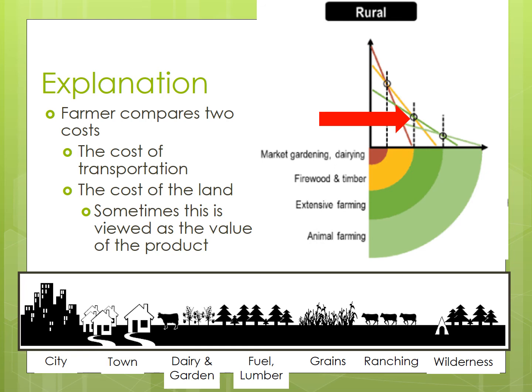Because this land is farther from market, making it less accessible, it is also less valuable and therefore cheaper. So a farmer can buy more land to grow more extensive grain crops and turn a profit. Von Thunen's model was the first economic location model and provided the basis for later models on the secondary and tertiary sector. But like all models, it needs to be adapted to actual conditions as well as changes in technology.